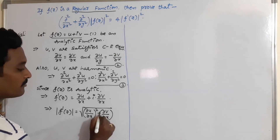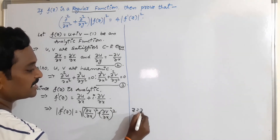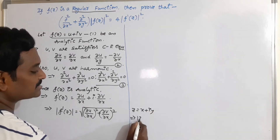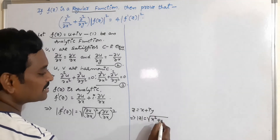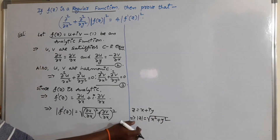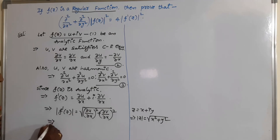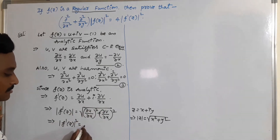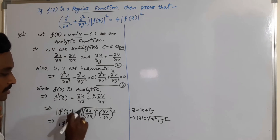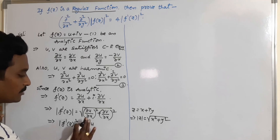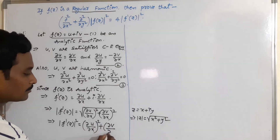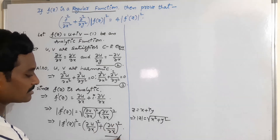Since we know that if z = x + iy, then |z| = √(x² + y²), similarly |f'(z)| = √((∂u/∂x)² + (∂v/∂x)²). Squaring both sides, the square root cancels, so |f'(z)|² = (∂u/∂x)² + (∂v/∂x)². Take this as equation 4.